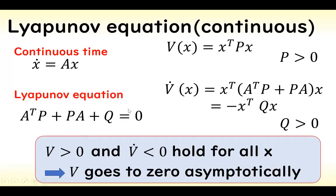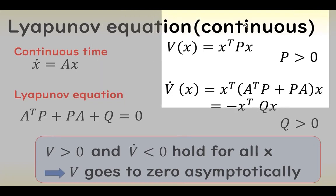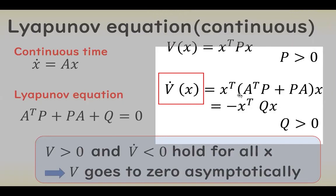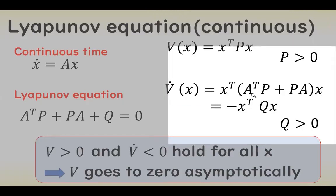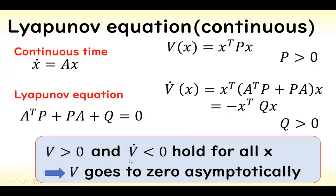This slide shows the case of the continuous-time system. The Lyapunov equation is given like this. V is given by this form and X is the state of the continuous-time system. In the case where P is a positive matrix, V is larger than 0 for all X. On the other hand, the time derivative of V is given like this. When Q is a positive matrix, this form is smaller than 0.